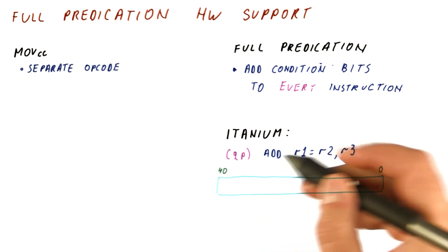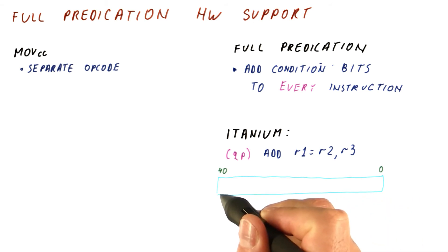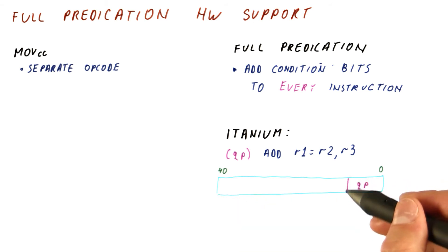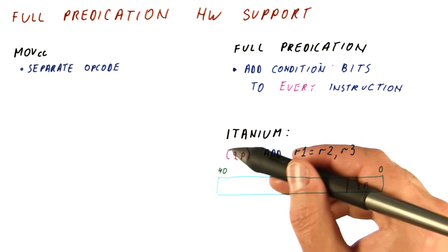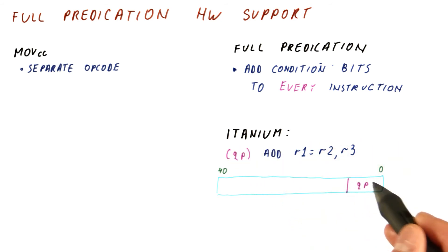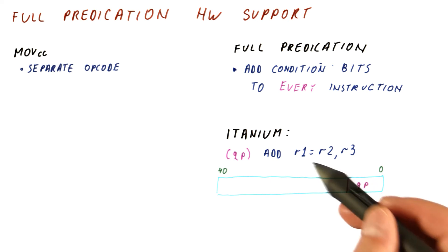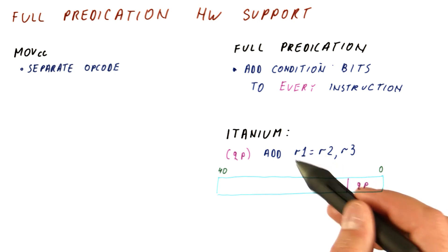The Itanium instruction has 41 bits, where the least significant six bits specify what the qualifying predicate is. The predicates in the Itanium are actually small one-bit registers, so that you can do a condition check and store the result in this one-bit register, and then really the six bits here tell you which of the 64-bit conditional registers you're going to use to determine whether to write to R1.